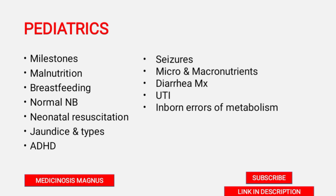Neonatal resuscitation steps — when to start CPR, when to give ventilation, those kinds of things. Jaundice and types: breast milk jaundice, breastfeeding jaundice, and other types including conjugated and unconjugated bilirubin, genetic disorders, and ADHD mainly its management.